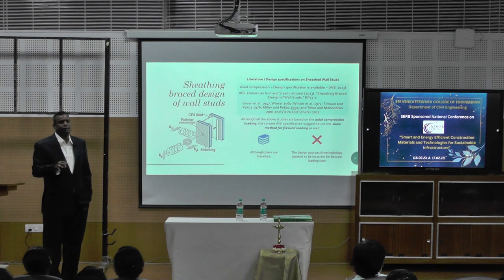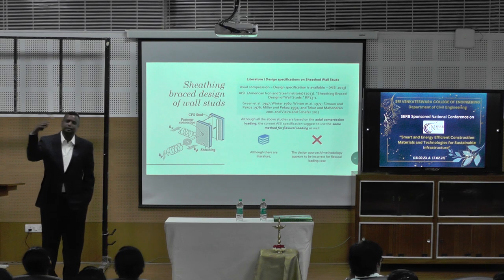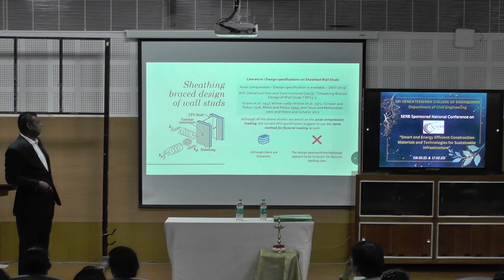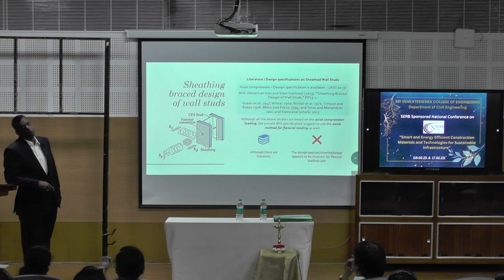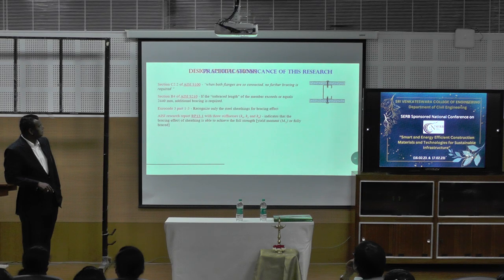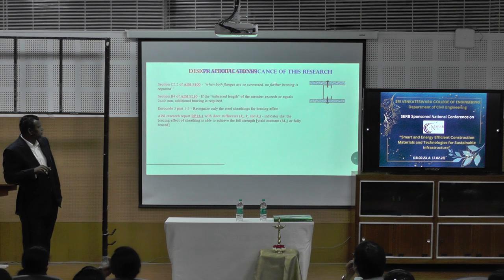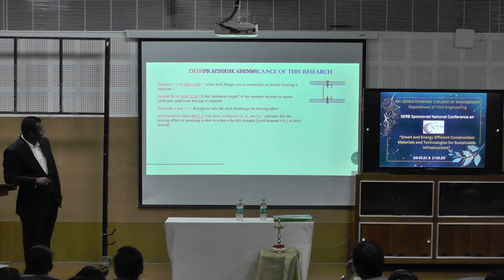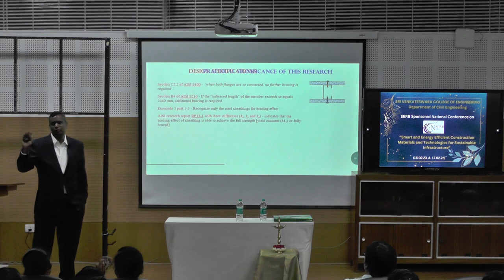We said there is something wrong with it — an Indian in some remote place commenting on an American specification and telling them they are wrong sounds weird to them, so we have to prove our point. The design methodology approach seems to be incorrect for the flexural loading case. If you look at Section C2.2 of AISI, they say: when both flanges are connected, no further bracing is required. But then they also say: if the unbraced length of the member exceeds or equals 244, additional bracing is required. Here they say no bracing, there they say additional bracing. Furthermore, AISI code says only steel bracing, but AISI research says that as long as KX, KY, KV is effective you can use it. So it is confused — what do I follow?